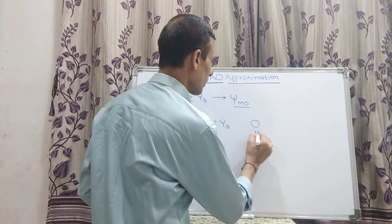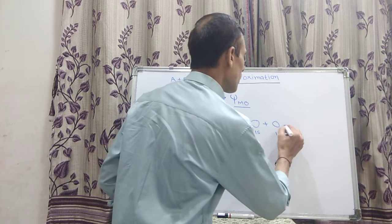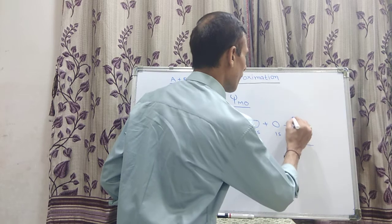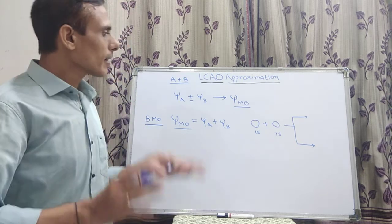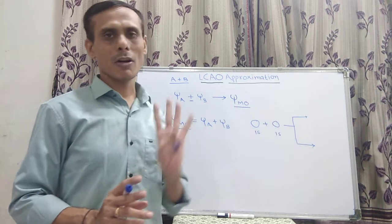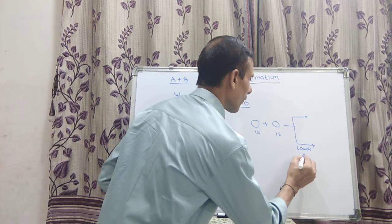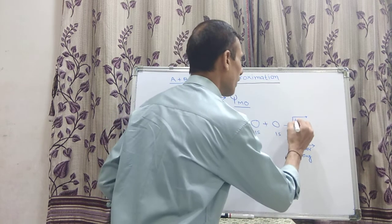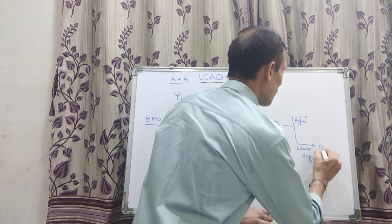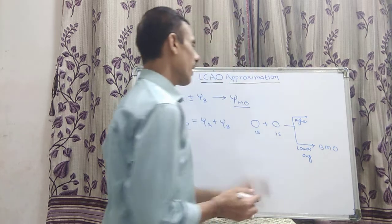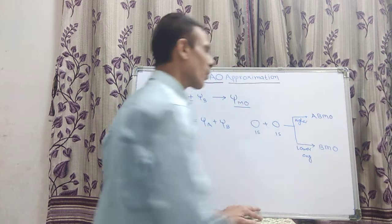Suppose we have taken one 1s atomic orbital and a second 1s atomic orbital. When these two atomic orbitals combine, there is formation of two molecular orbitals — one molecular orbital having lower energy and another having higher energy. The lower energy molecular orbital is called the bonding molecular orbital, and the higher energy one is called the anti-bonding molecular orbital.